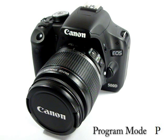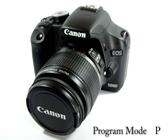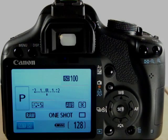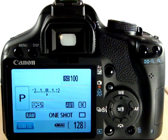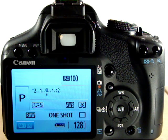Program mode is signified by the P on the mode dial, just in between the creative auto and the shutter priority or TV mode. Okay, here we are with the camera powered up and it's set currently in program mode, as designated by the P on the mode dial.